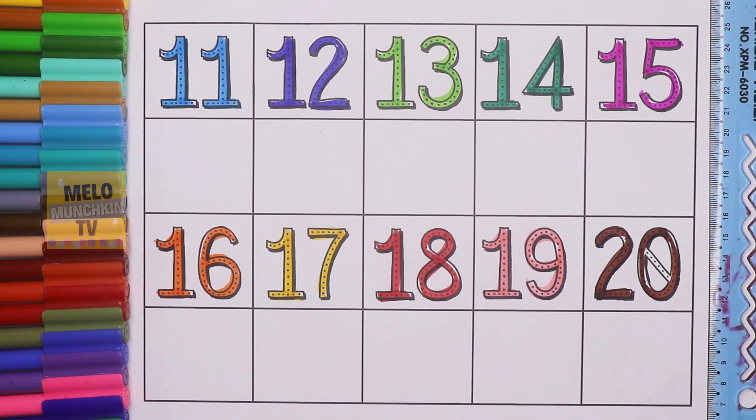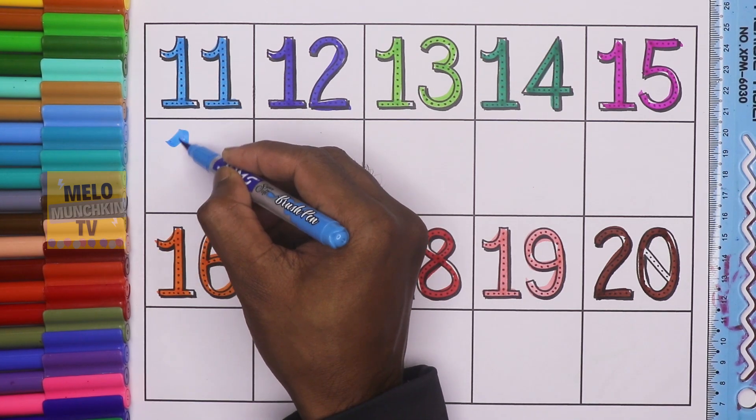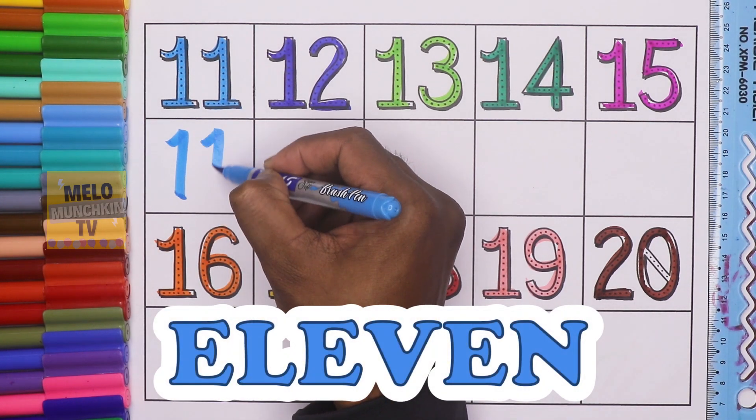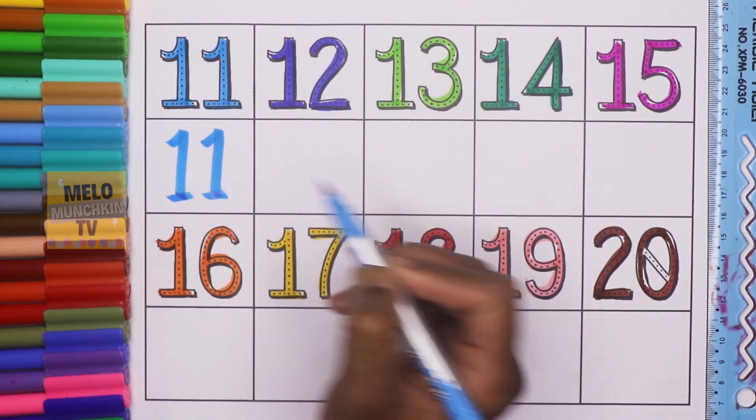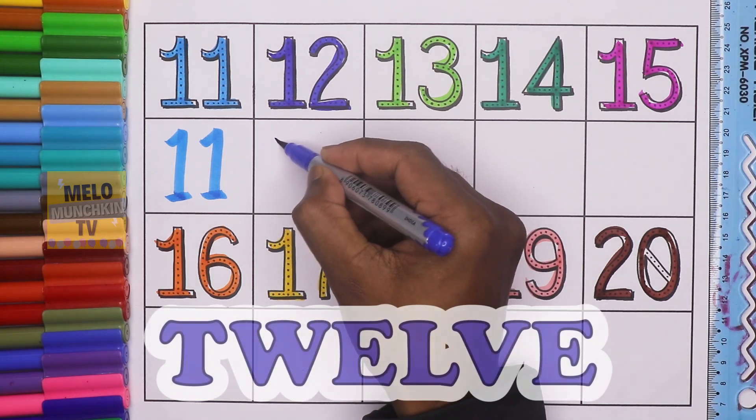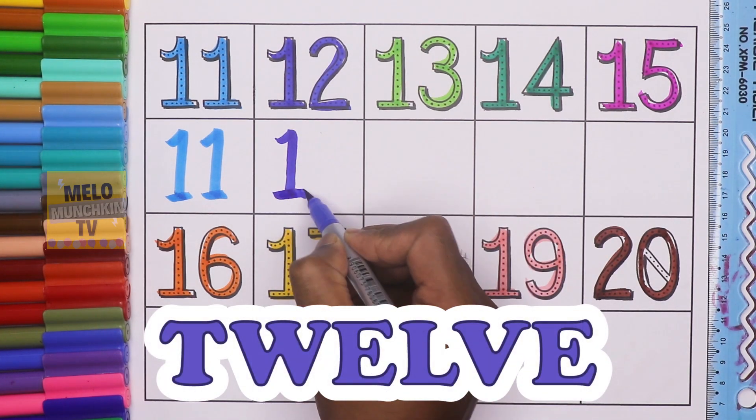So let's repeat once again. This is blue color. 11. E, L, E, V, E, N. 11. 12, T, W, E, L, V, E, 12.